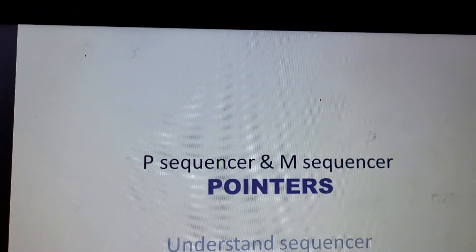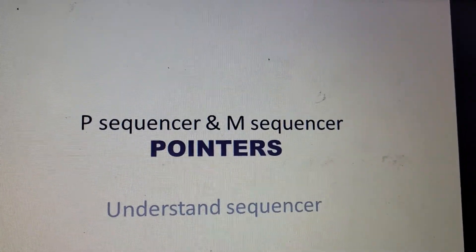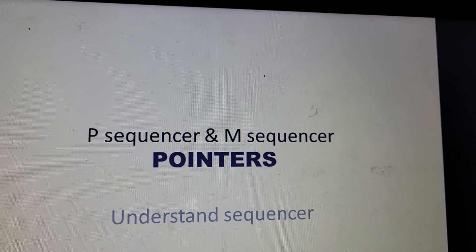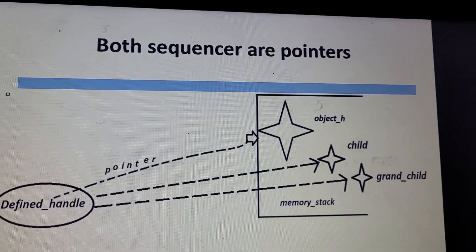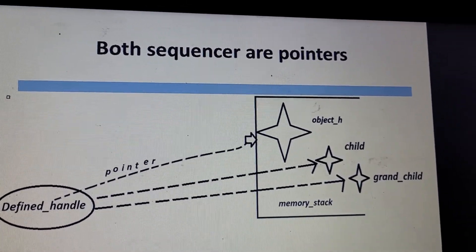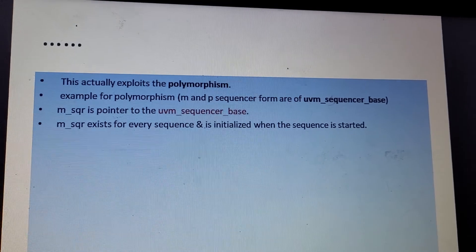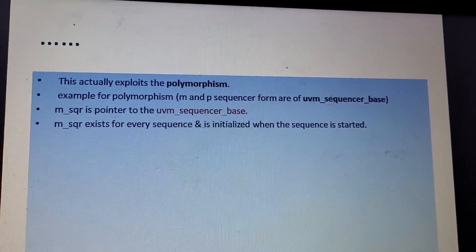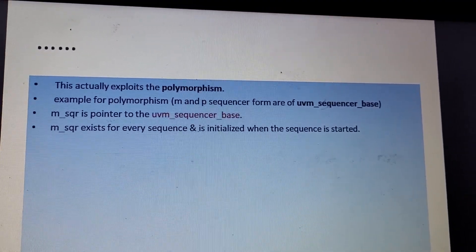Let us discuss what is the need for p_sequencer, what is the existence of p_sequencer and m_sequencer. Both p_sequencer and m_sequencer are pointers. If you have a handle, they are pointing to that object address in memory.